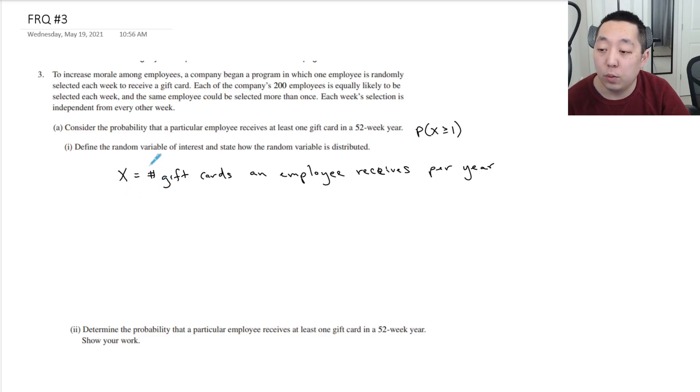Now, what is this? Well, there's two outcomes. There are 52 trials, and there's two outcomes: either he gets a gift card or he doesn't get a gift card. So this is a binomial distribution.